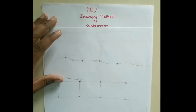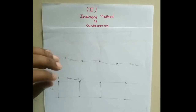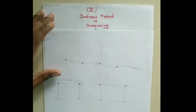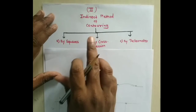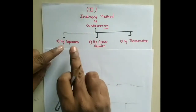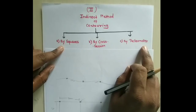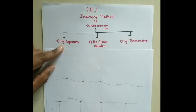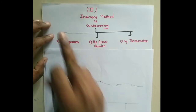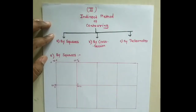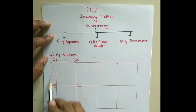In the indirect method of contouring, there are three important methods: first, by squares method; second, by cross-section method; and third, by tacheometer method. In this video, we will learn only the by-squares method.